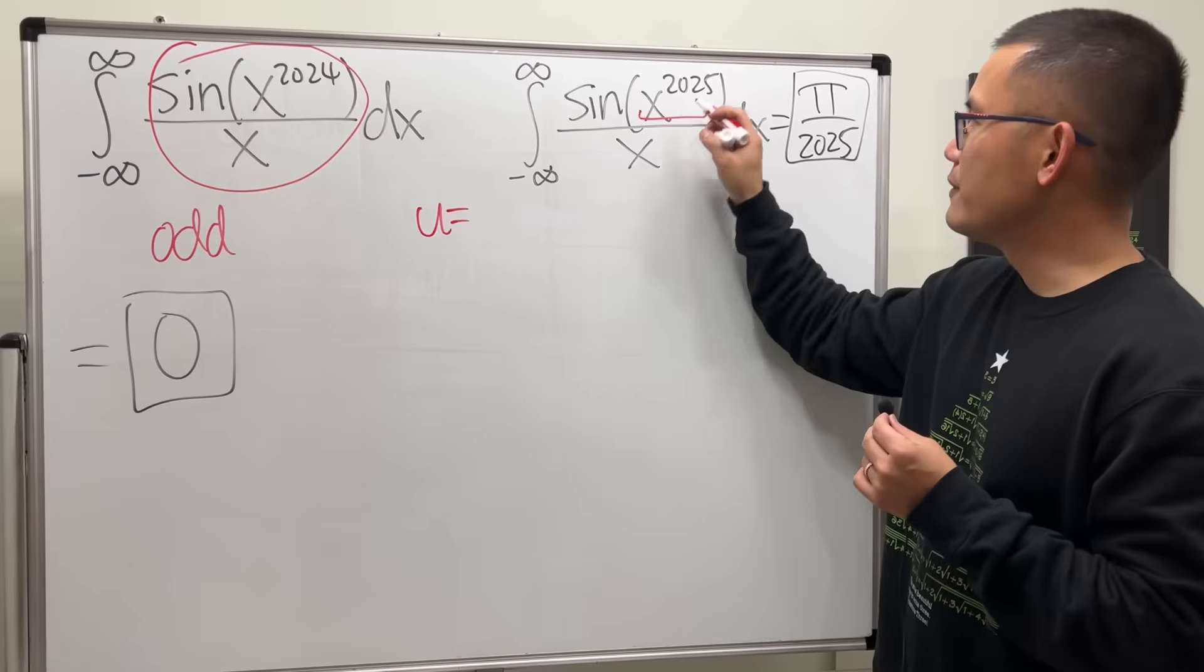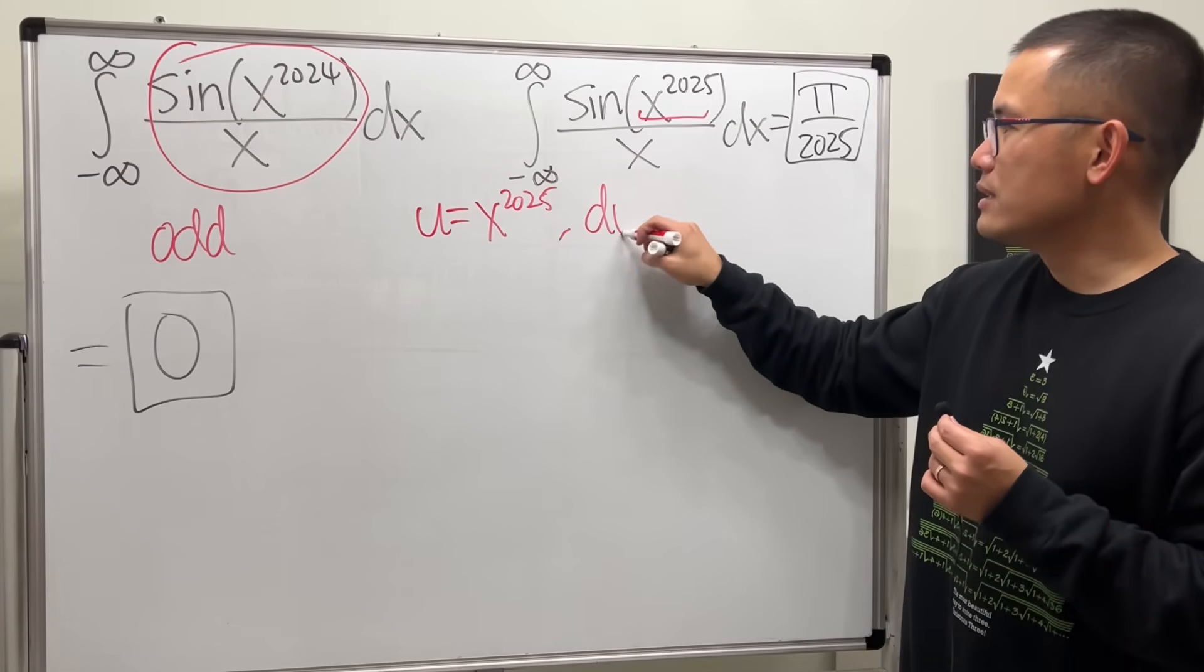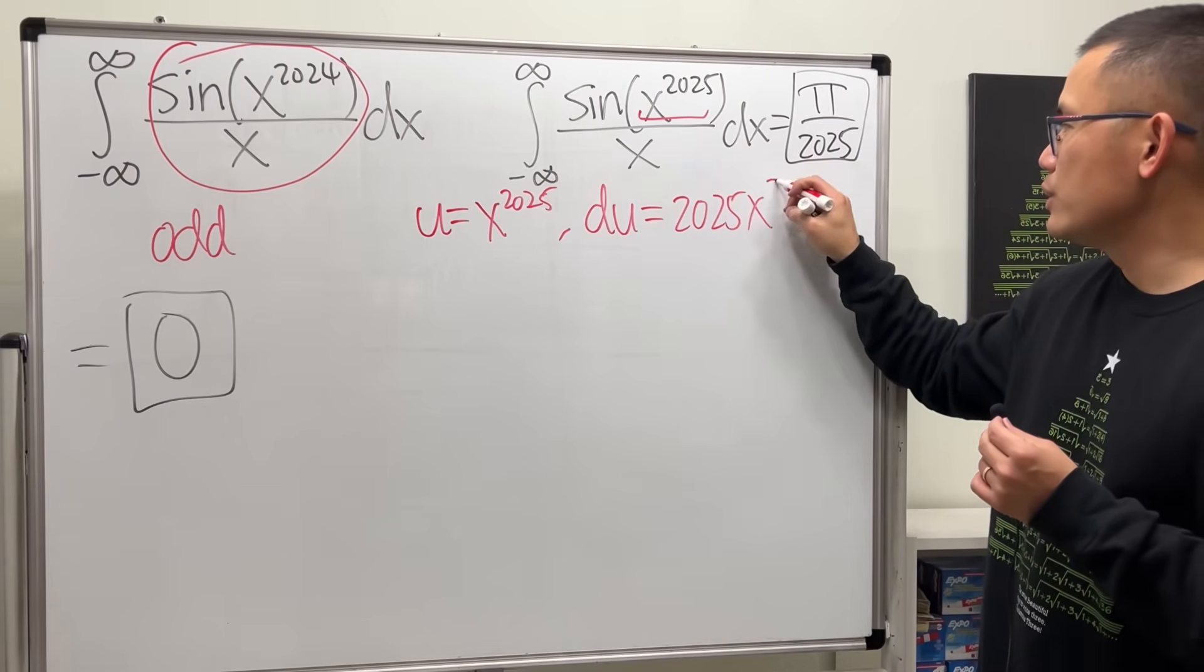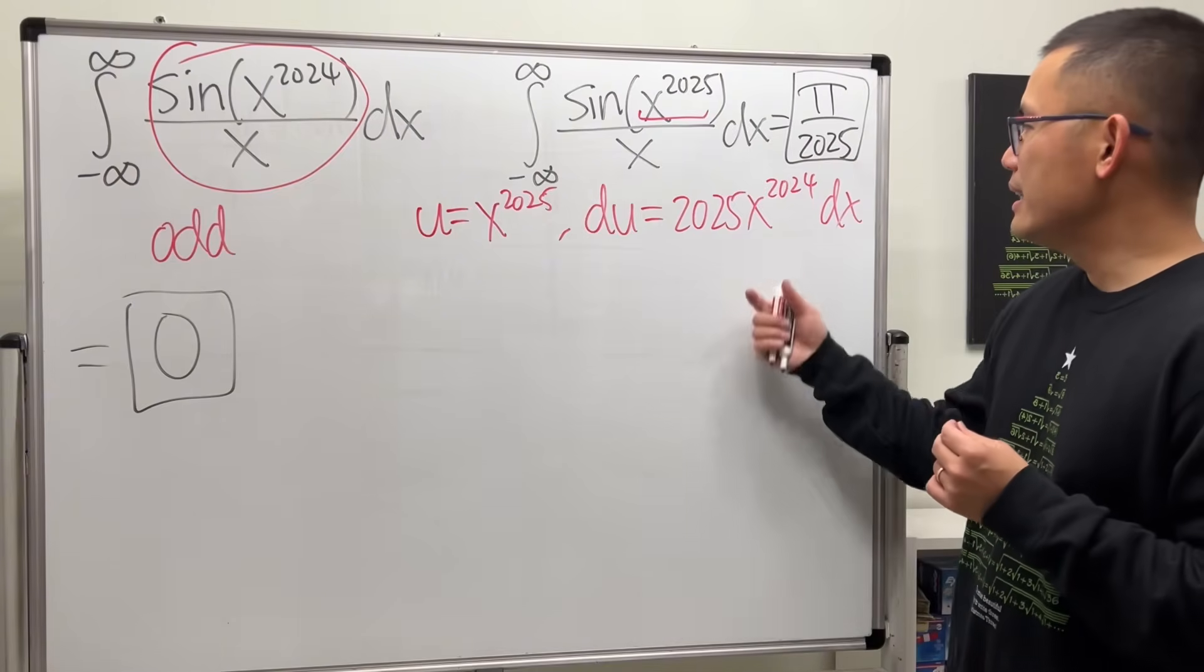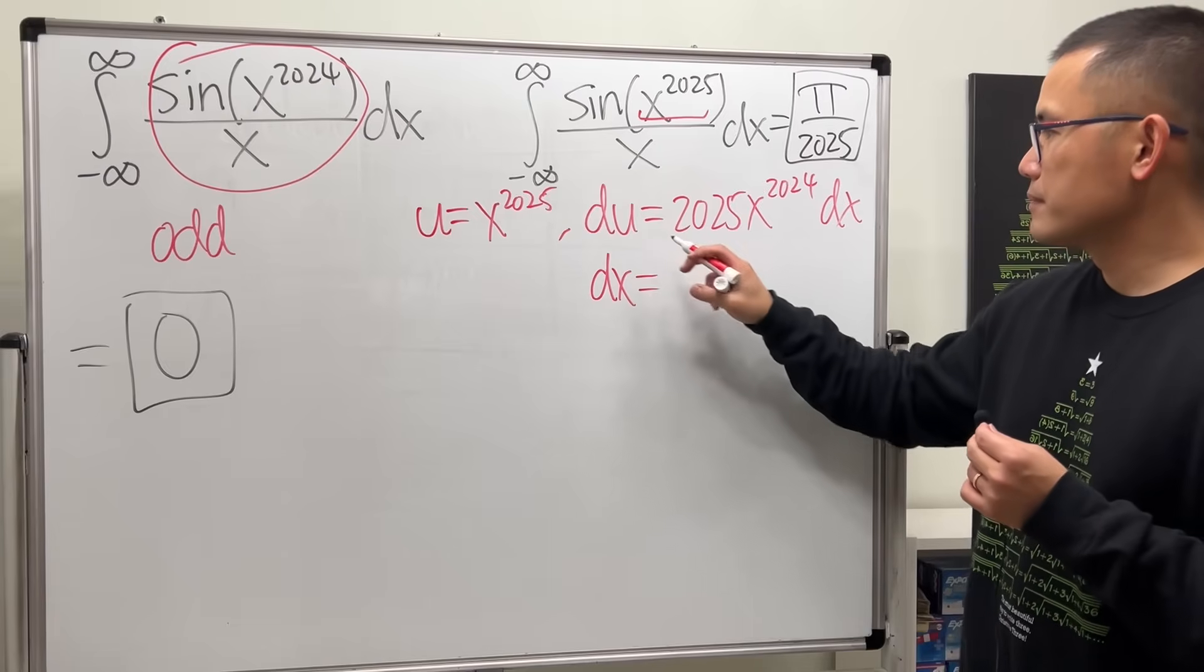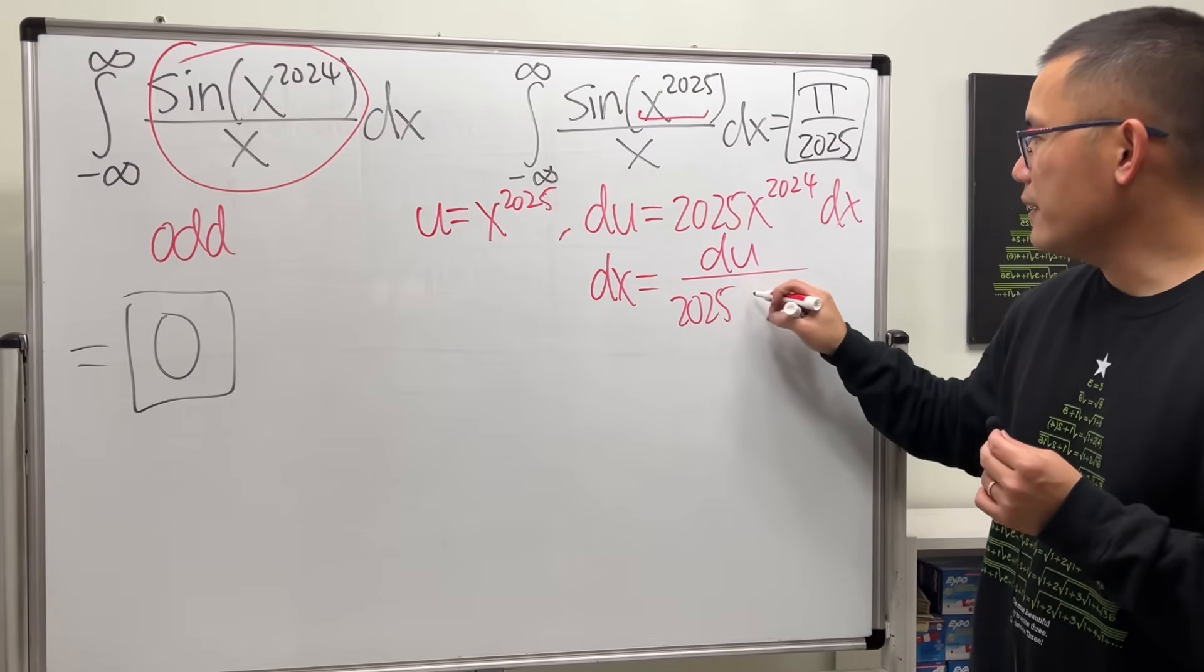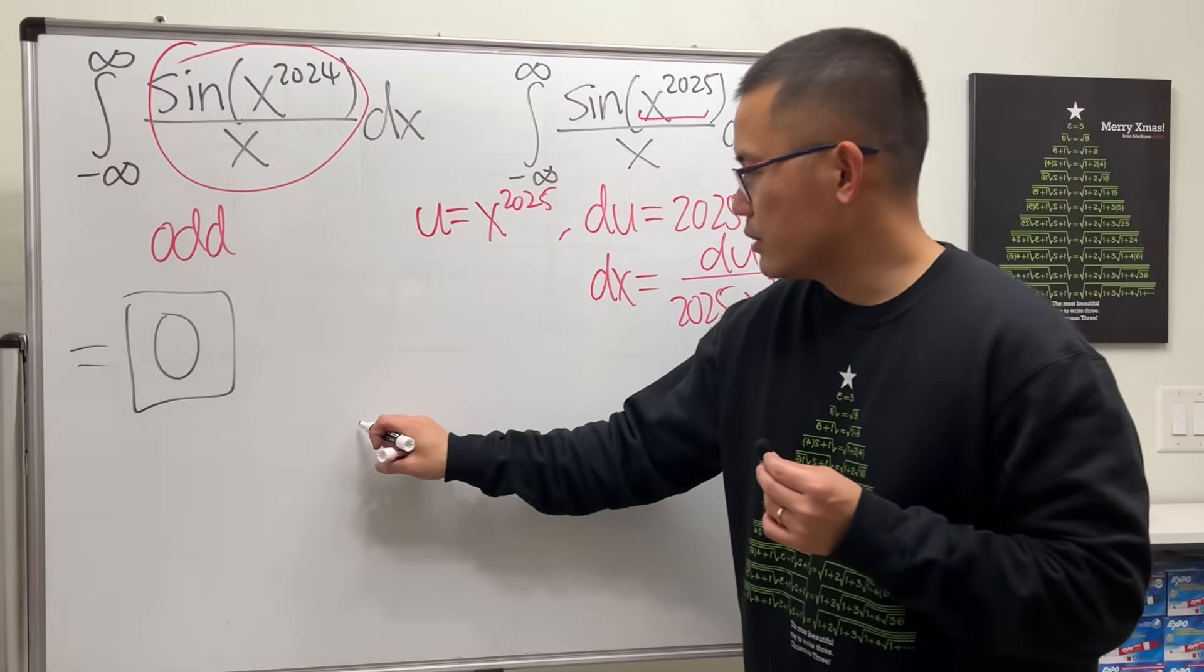Let u equal to the inner function, which is x to the 2025, and then you will see du equals 2025 x to the 2024 dx. And then let me isolate the dx, so we know dx equals du over 2025 x to the 2024.